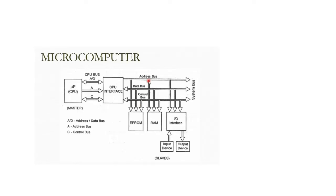There are three important buses: the address bus, data bus, and control bus. Addresses are transferred through the address bus. While programming, memory has addresses like 1000, 1001, 1002 — and so on. These are sequential starting addresses, like 1100, 1101, 1102, going continuously.